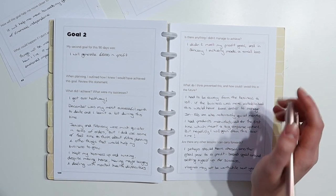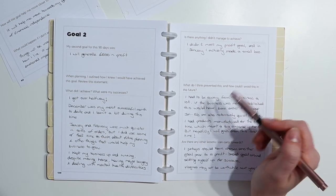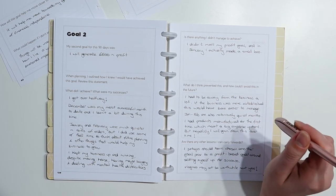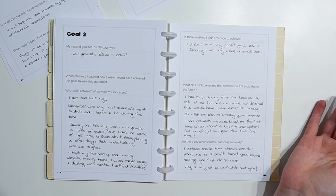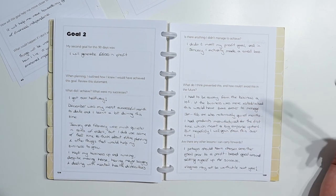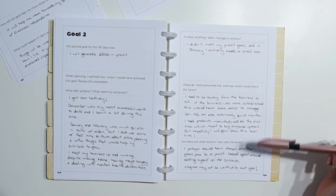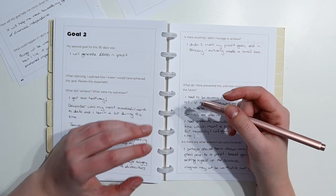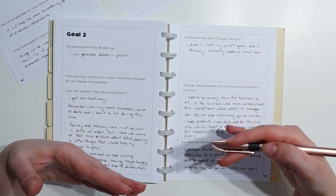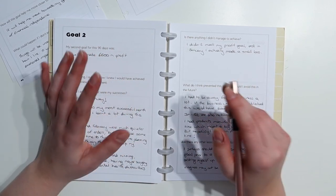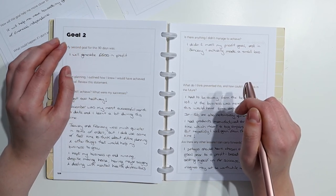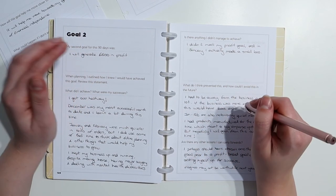And there's minimum order quantities for that. So I did three designs and I had to get 50 rolls of each. So that was a big expense up front that I've never really had before. And obviously it came off the back of a quiet month. So it wasn't the ideal time. Perhaps in future that needs to be taken into account that I don't want to be ordering in new products in January. But there we are. The fact is that I have that stock now and it's not money spent and gone forever because, assuming the washi tapes sell, which they are doing good so far, I should make that money back and some profit off them. So I guess it's a cash flow situation. Are there any other lessons I can carry forward? I said, which I mentioned before, I perhaps should have chosen another goal prior to a profit based goal around setting myself up for success.